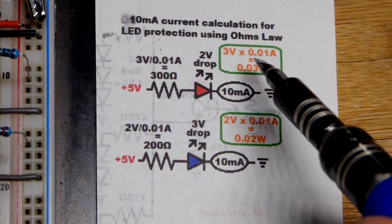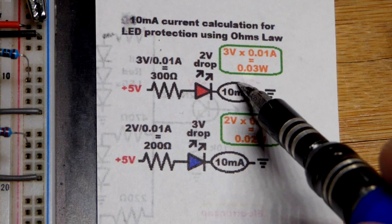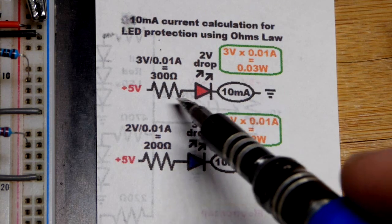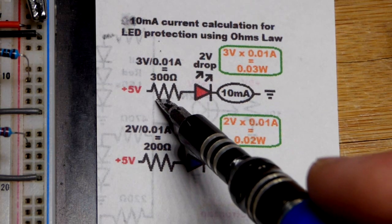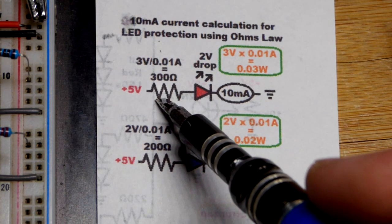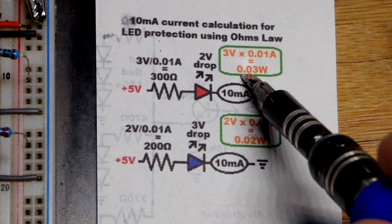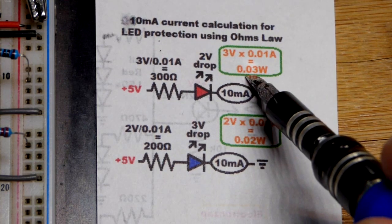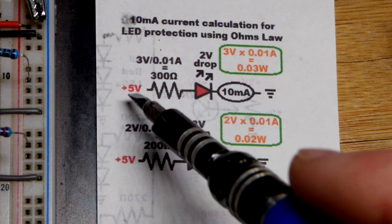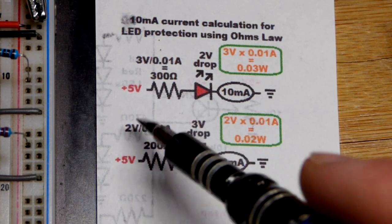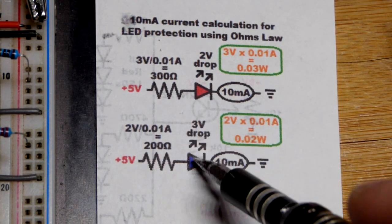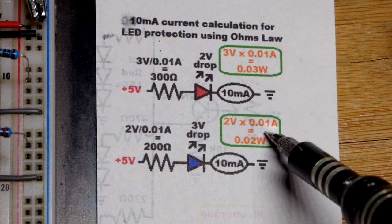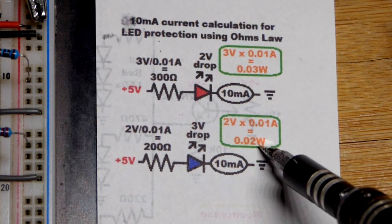Now we want to measure the power dissipation of the resistor. They're rated for 0.25 watts maximum, but you should keep it to 0.125 watts. For the red LED, 3 volts times 0.01 amps is 0.03 watts. For the blue LED, 2 volts times 0.01 amps is 0.02 watts, both well below 0.125 watts.